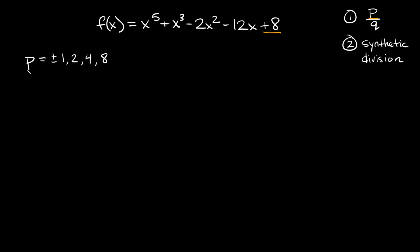And then we're going to divide those by q. Your q numbers are the factors of your leading coefficient. Here you can see our leading coefficient is basically a 1, so the factors of 1 are positive or negative 1 — those are the only two.